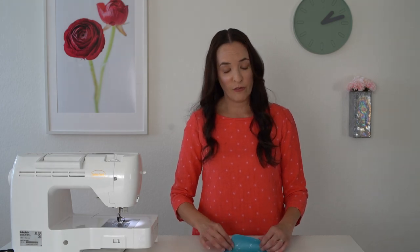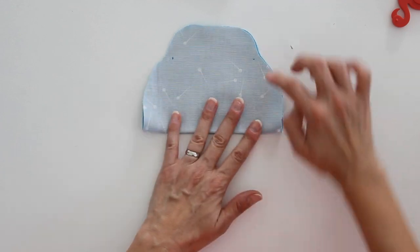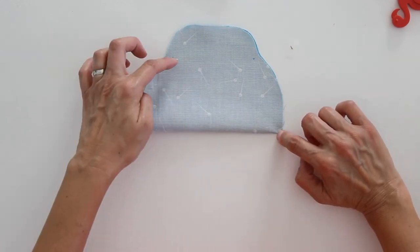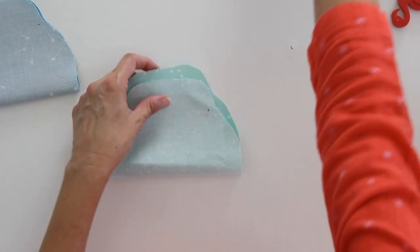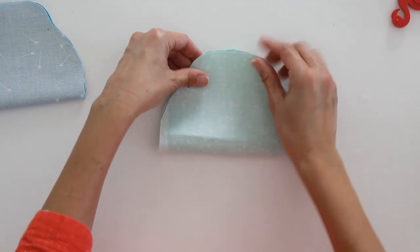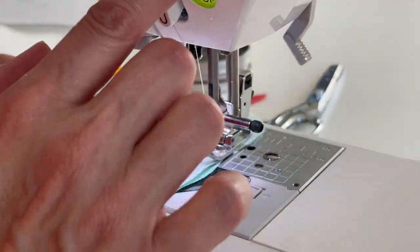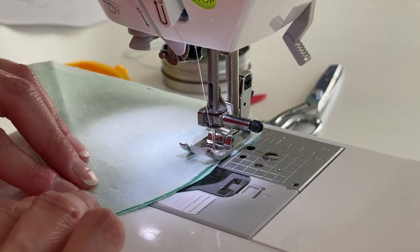So once you have your fabric cut and you have your markings transferred, you want to fold it right sides together, and you're going to stitch from that dot marking down the edge using a quarter inch seam. You're going to do that on the outer and the lining fabric. And I am backstitching right at the dot there.